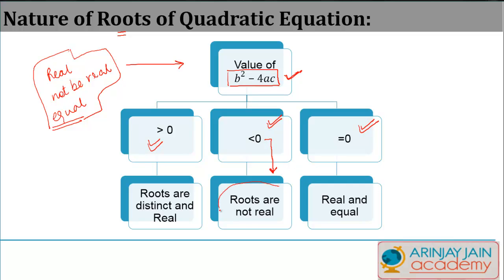Whenever the value of b squared minus 4ac is less than zero, the roots are not real. Whenever it is equal to zero, the roots are real and equal. When it is greater than zero, the roots are distinct and real. We will now look at three examples, one for each case.